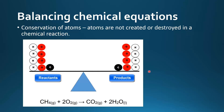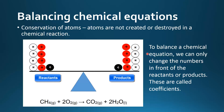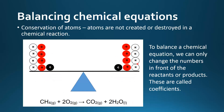To balance a chemical equation we can only change the numbers in front of the reactants or products — these are called coefficients. In this example, I have added a 2 in front of the oxygen and a 2 in front of the water. By adding these coefficients, I have balanced this equation so the number of atoms in the reactants equals the number of atoms in the products.